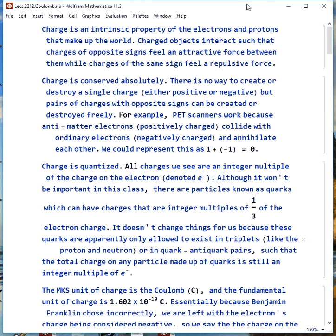For example, PET scanners in the hospital work because antimatter electrons, which are positively charged, collide with ordinary electrons, which are negatively charged, and completely destroy each other. We could write this as 1 + (-1) = 0. The charge is balanced.